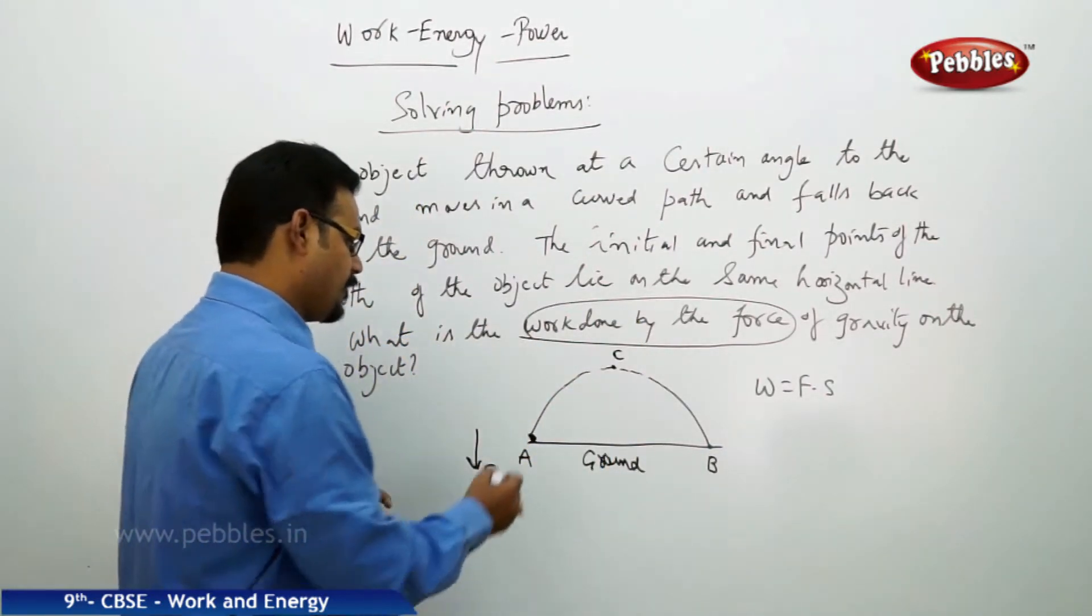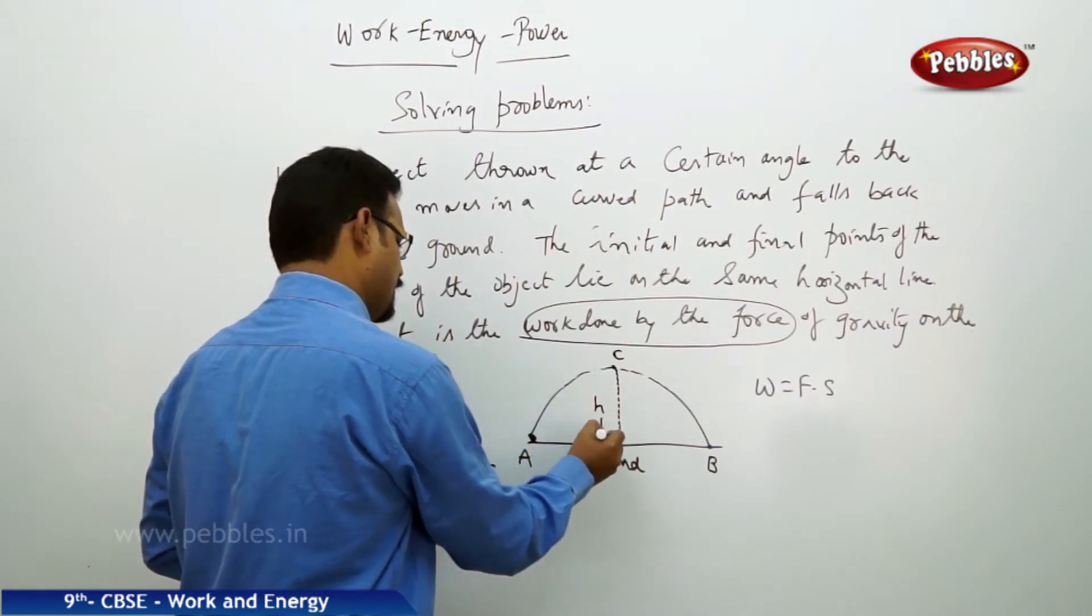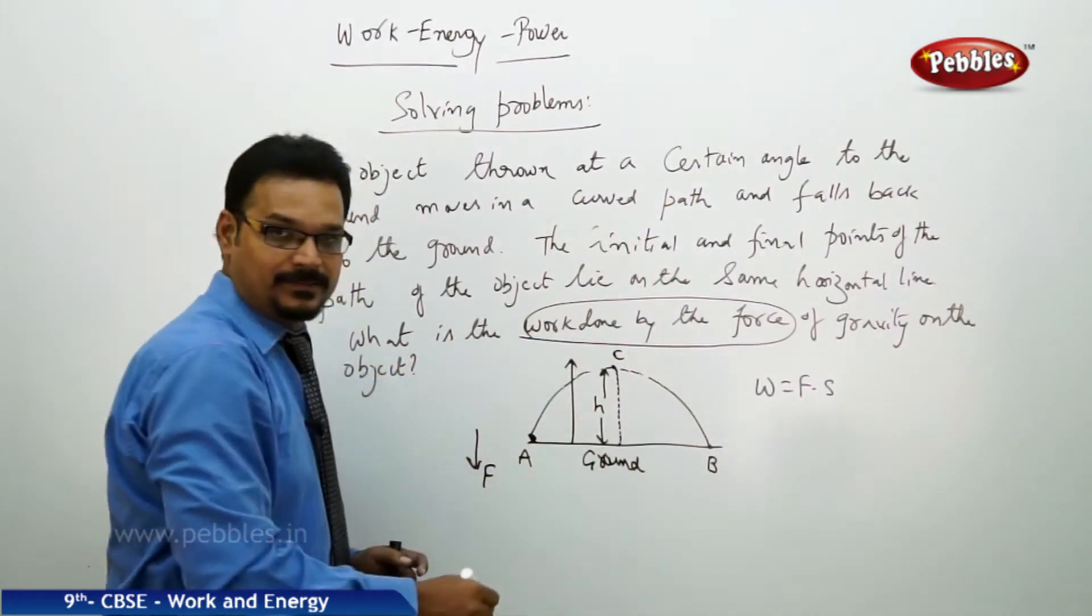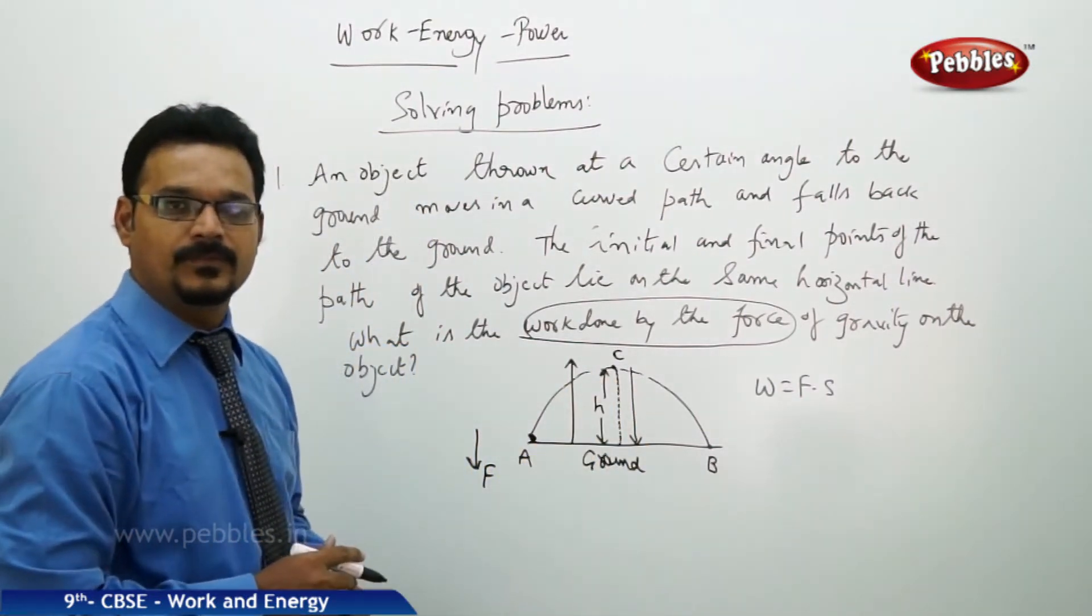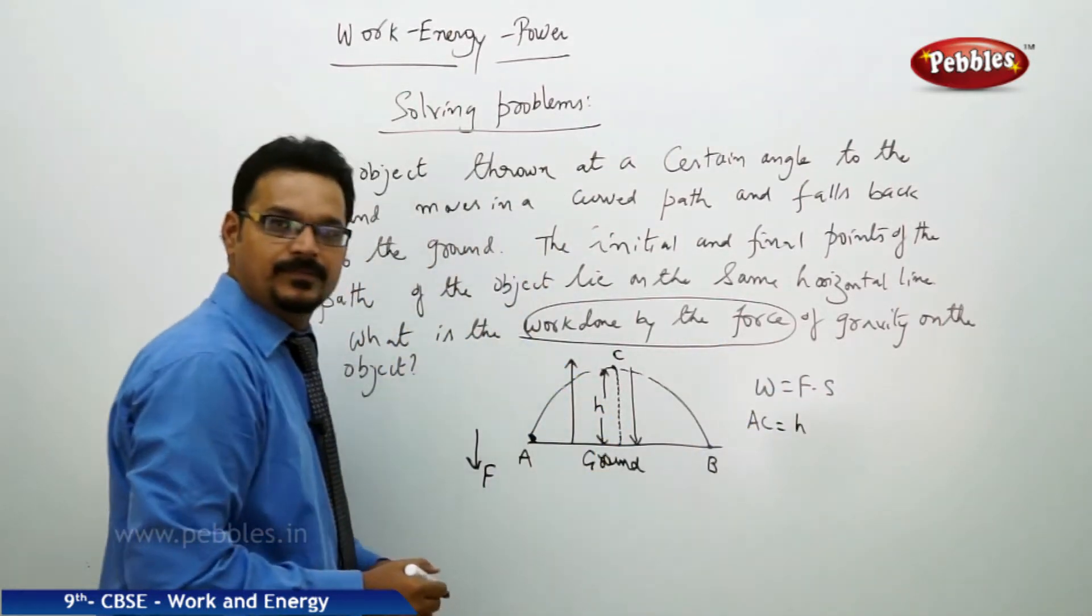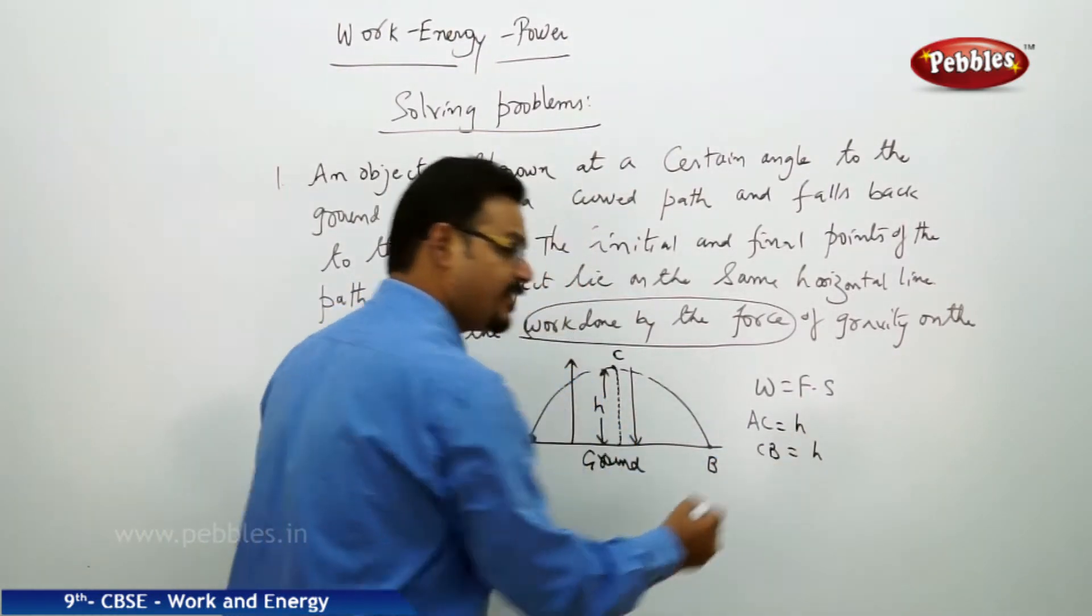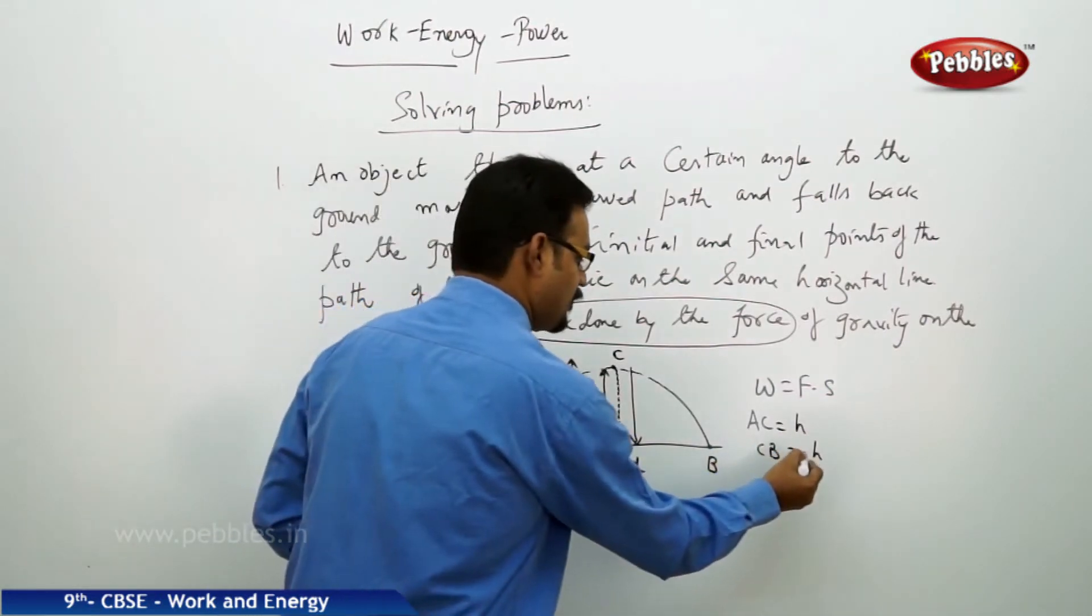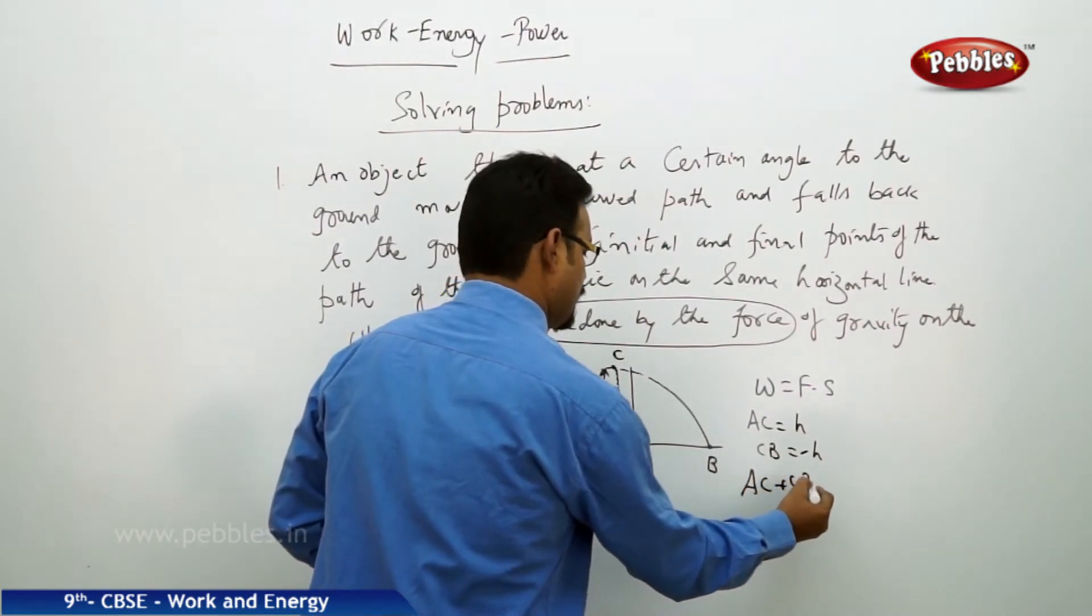Let us locate C, the highest point in the path. From A to C, this is the height reached H. C to B, again the height covered is H. The only difference is, as it's displacement, C to B is opposite to the first one, so we need to keep minus H.